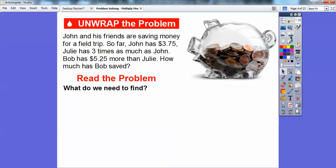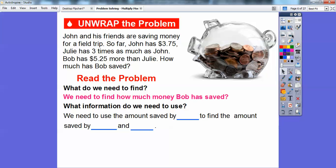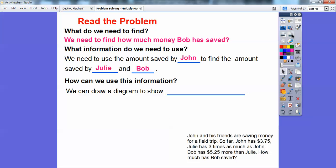Let's go through it. We're going to read the problem. What do we need to find out? Well, we need to find out how much money Bob has saved. So what we're going to do is the information that we need to use is the amount saved by all three of them, saved by John. Then we'll find the amount saved by Julie, and that'll give us the amount saved by Bob. So how can we use this information? We can draw a diagram to show how much each has spent.